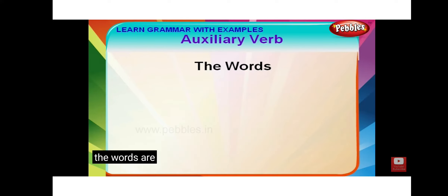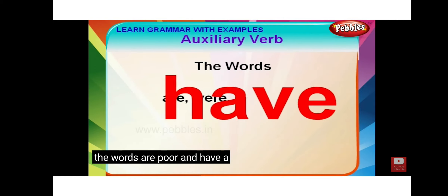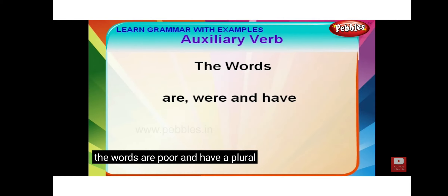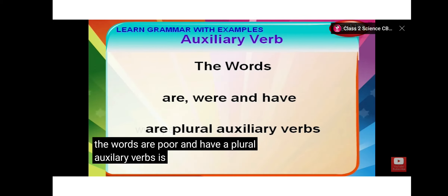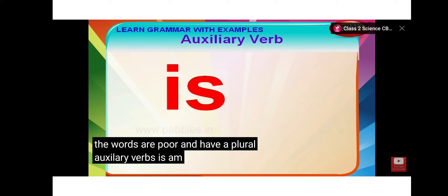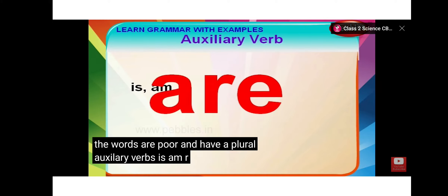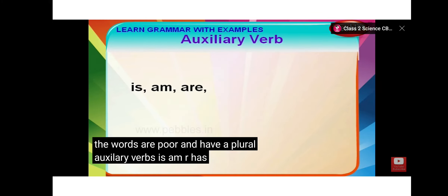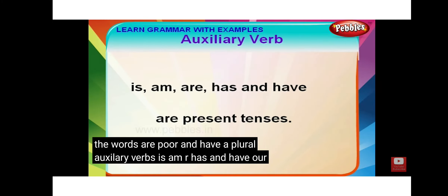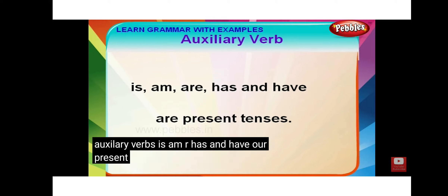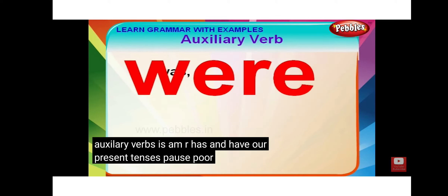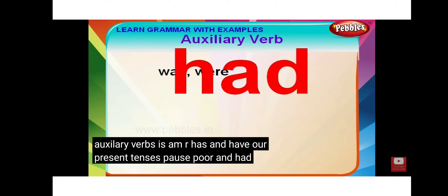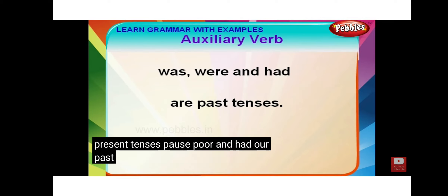The words are, were, and have are plural auxiliary verbs. Is, am, are, has, and have are present tenses. Was, were, and had are past tenses.